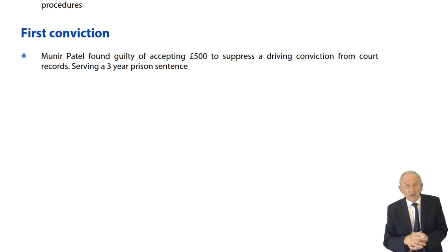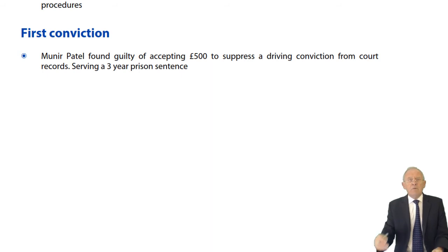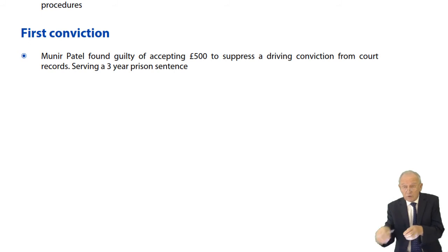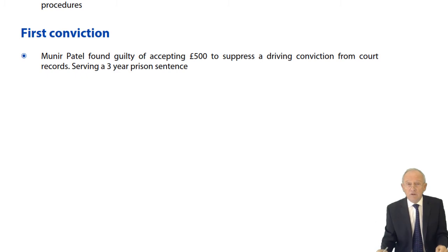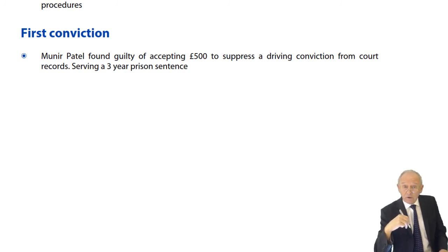The first conviction under the Bribery Act was Munir Patel, somewhere around 2012. He had received £500 from a person in court facing a penalty for a driving offence, in exchange for suppressing the detailed criminal record of an earlier driving offence. Munir Patel did serve three years imprisonment, damaged his reputation, lost his job, and now finds it difficult to get another job because he is regarded as a dishonest person who cannot be trusted.